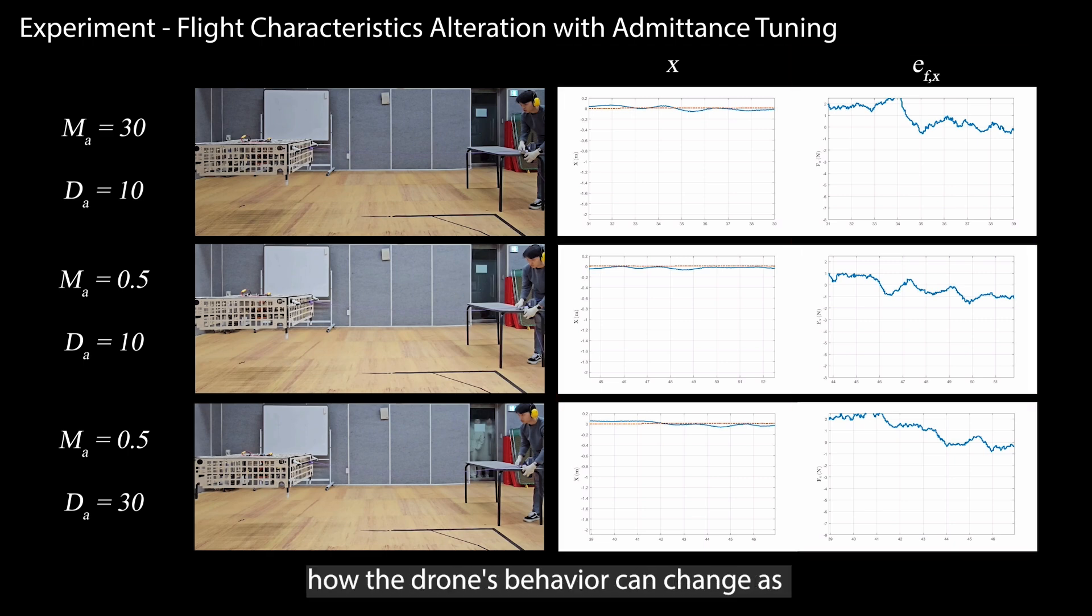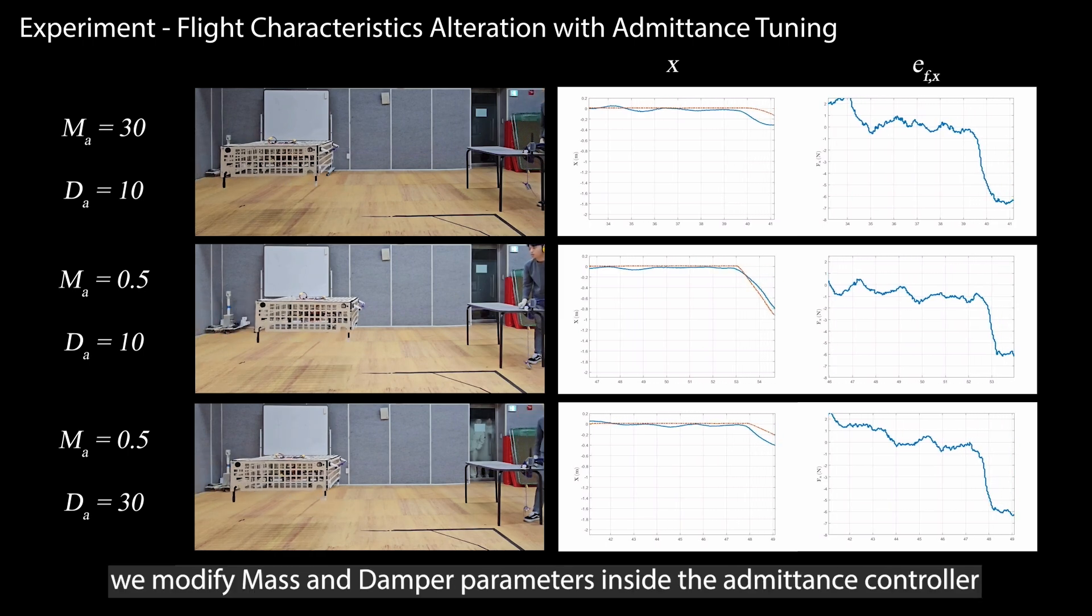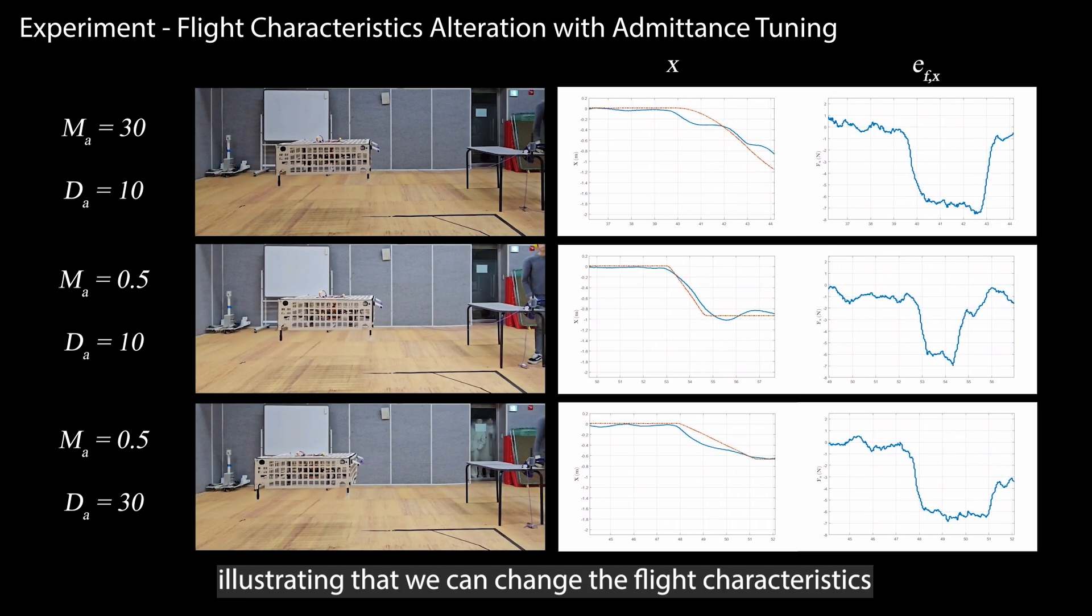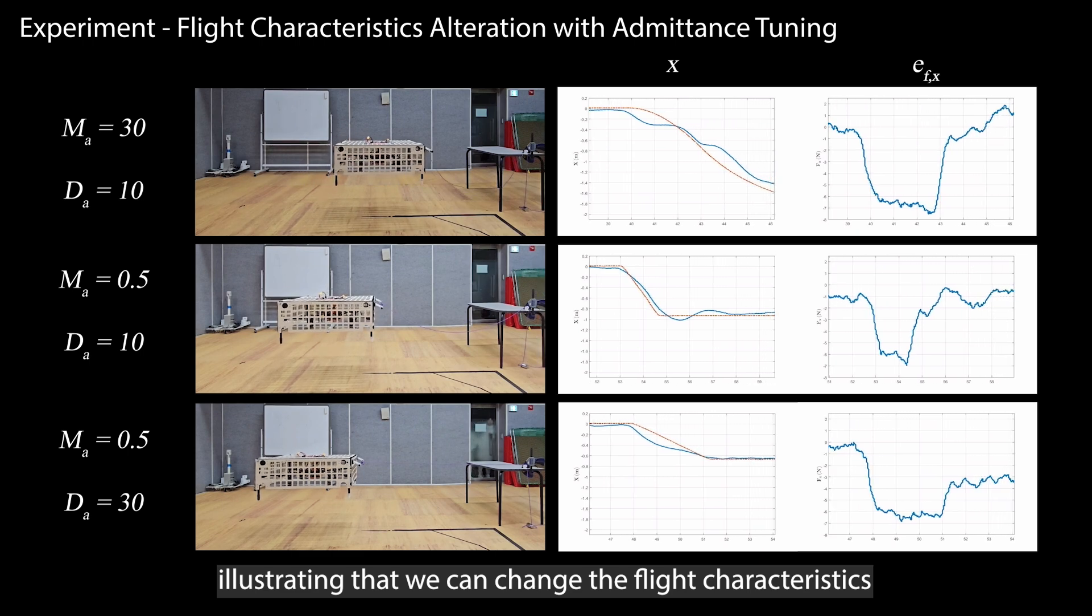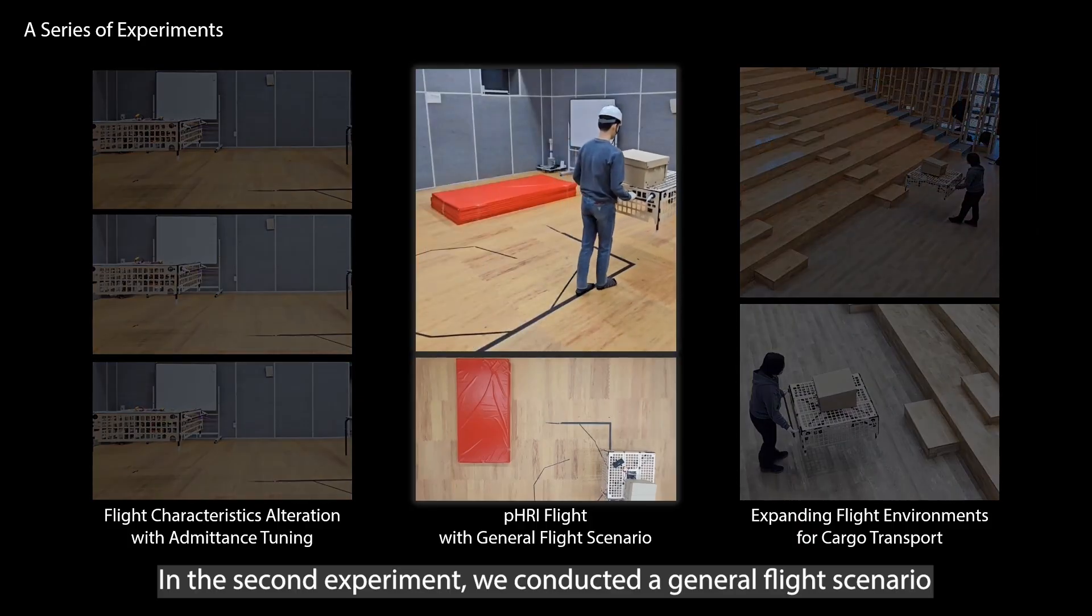This experiment is designed to showcase how the drone's behavior can change as we modify mass and damper parameters inside the admittance controller, illustrating that we can change the flight characteristics depending on the human preference.